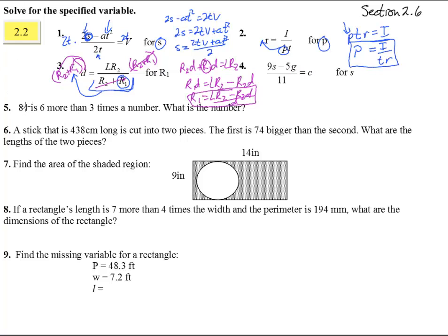Here we have a translation problem. 84 is 6 more than, that's a plus 6 onto whatever they're going to do, 3 times a number. Let's pick the letter Q to represent number right now. 3 times that number Q. So 6 more than 3 times that number. Subtract 6 from both sides and we get 78 equals 3Q. And then divide both sides by 3 and we get that that number Q equals 26. Our number is 26.